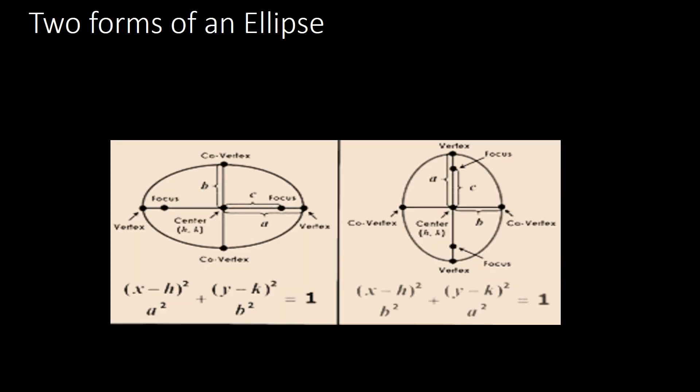There are two forms of an ellipse. The first is a horizontal orientation. In a horizontal ellipse, the major axis is the x-axis, and the equation is: (x − h)² / a² + (y − k)² / b² = 1. Notice that a² is under the x term because the vertex lies on the major axis, which here is the x-axis.